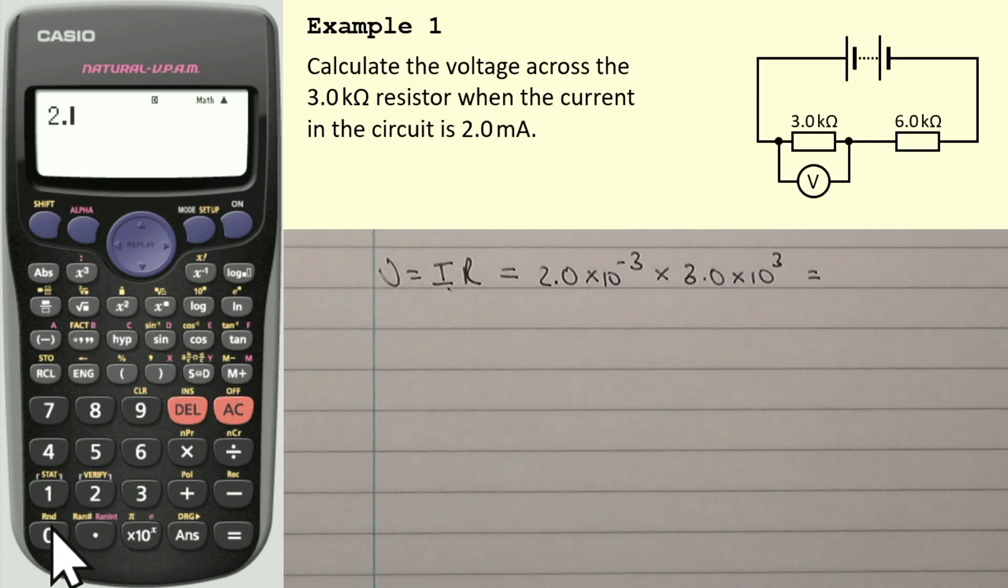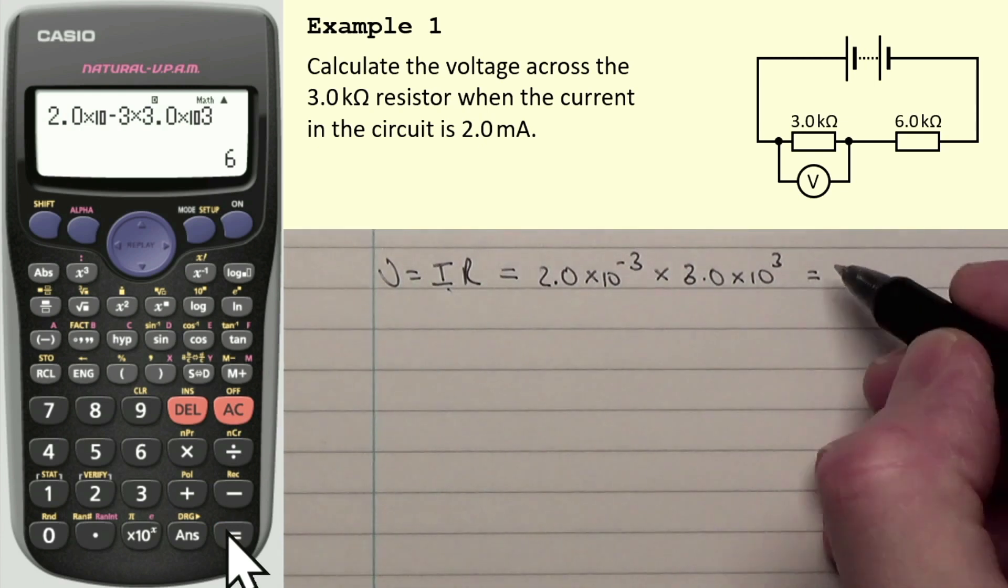And, what we'll do is we'll enter that into a calculator like so. I've got 2.0 times 10 to the power of 3. I just click this button down at the bottom, times 10 to the power of, and it's times 10 to the minus 3. So, there's the negative button here. Negative 3. Multiply that by 3.0, and then, times 10 to the power of 3. And, that gives us 6 volts.